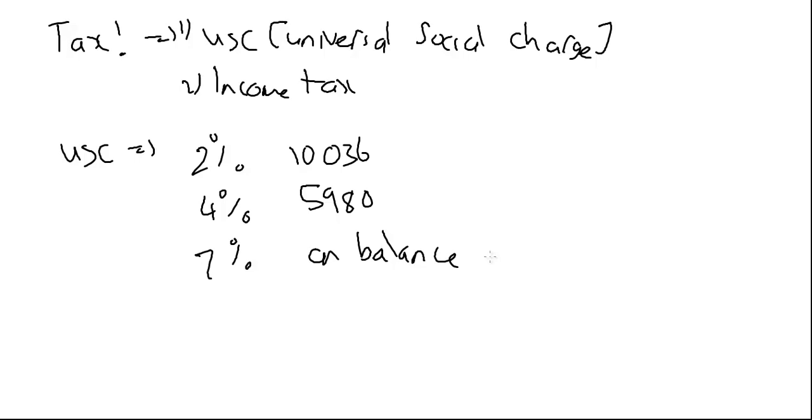Now mathematically, the question to be asked is if you make a certain amount of money. So think of an example. Say somebody makes 50,000 euro. How much does he or she pay? Well, you'd go, what is 2% of 10,036? So 2% of 10,036 is equal to, I just put that into my calculator, and that's 200 euro and 72 cents. So then